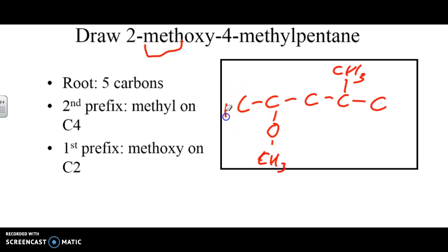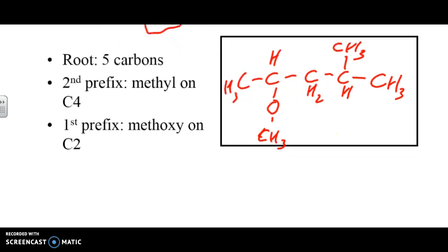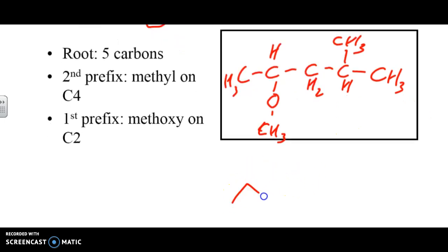So now what we need to do is fill in the remaining hydrogens. Now remember, when you're filling in the hydrogens, each carbon should have four bonds. So there's one hydrogen attached here because there's three other bonds there. H2, H, and H3. So that's going to be our molecule. If I was to draw that as a line structure, it would look something like this.